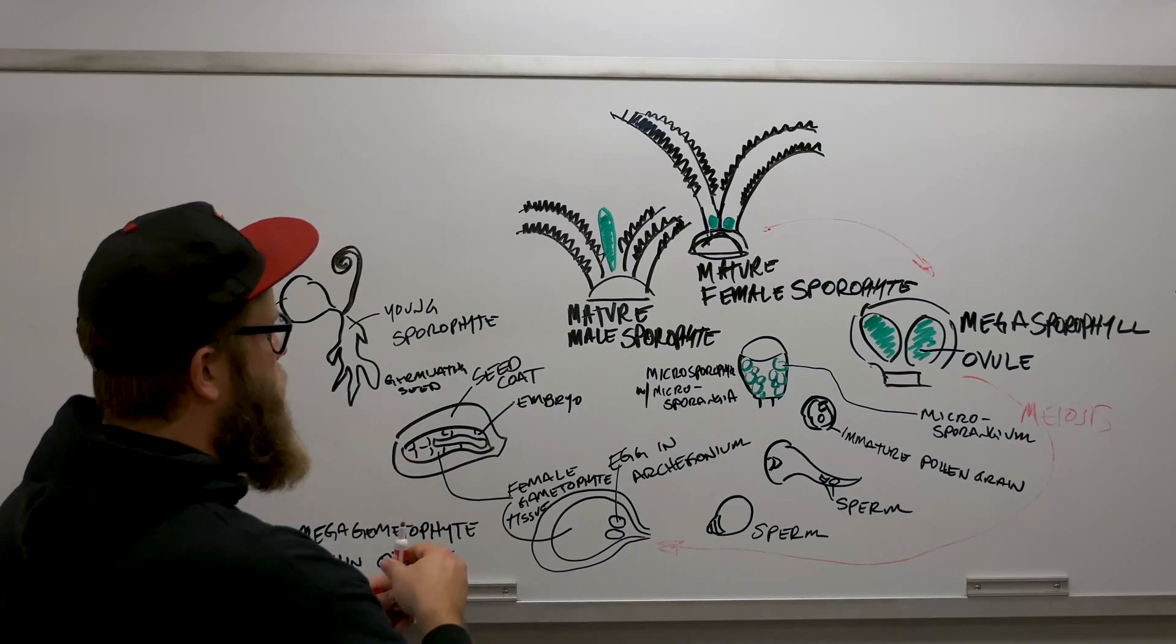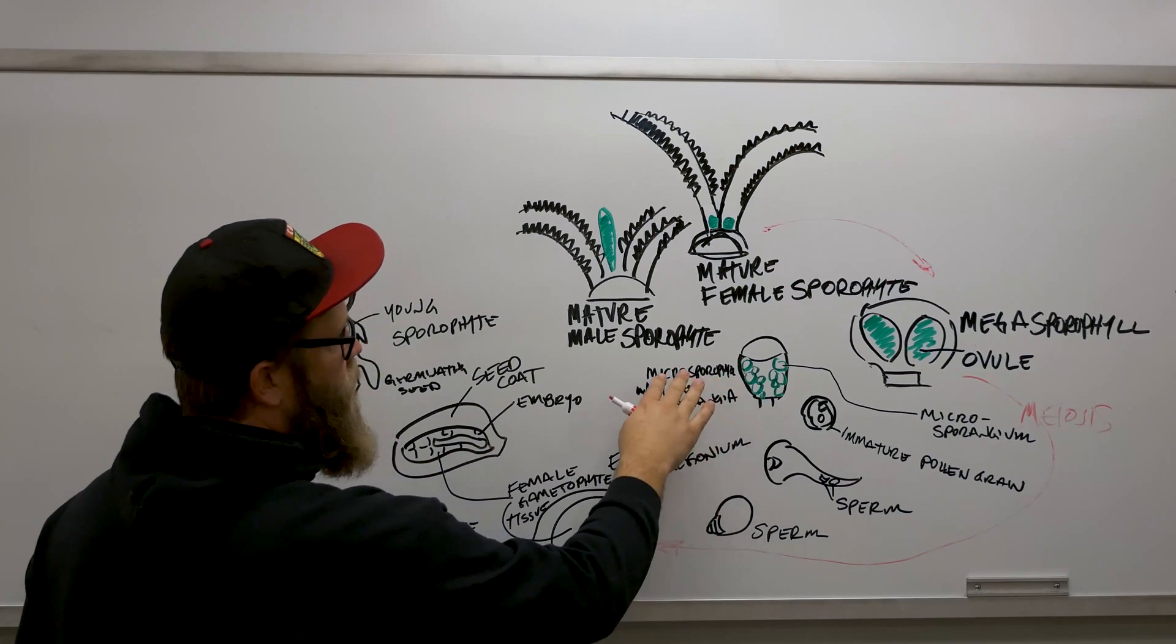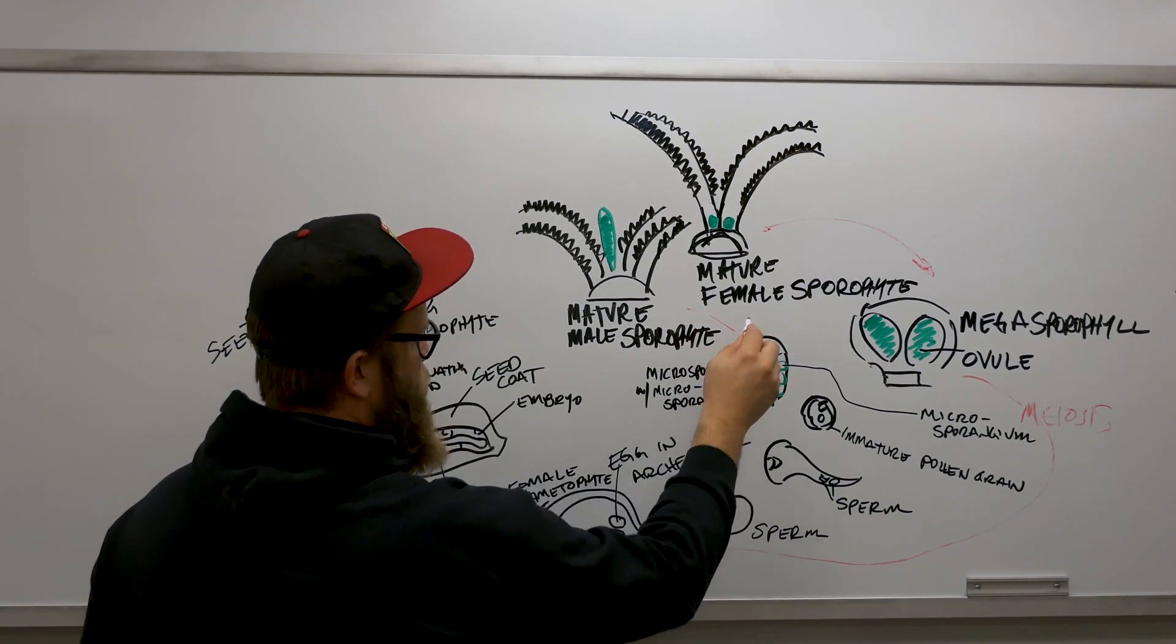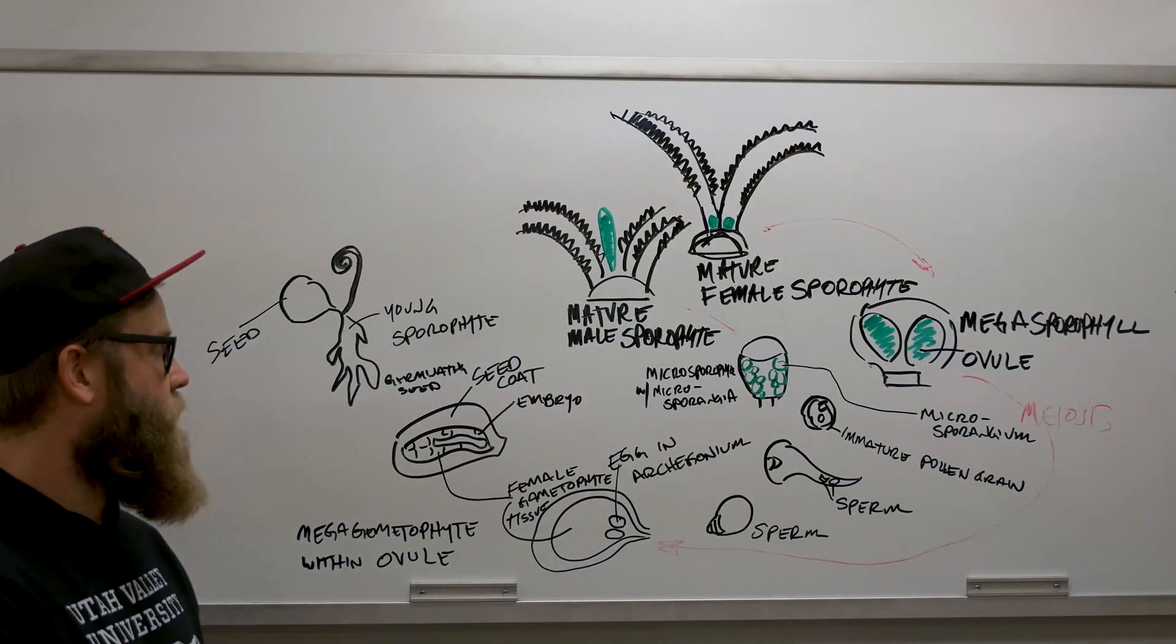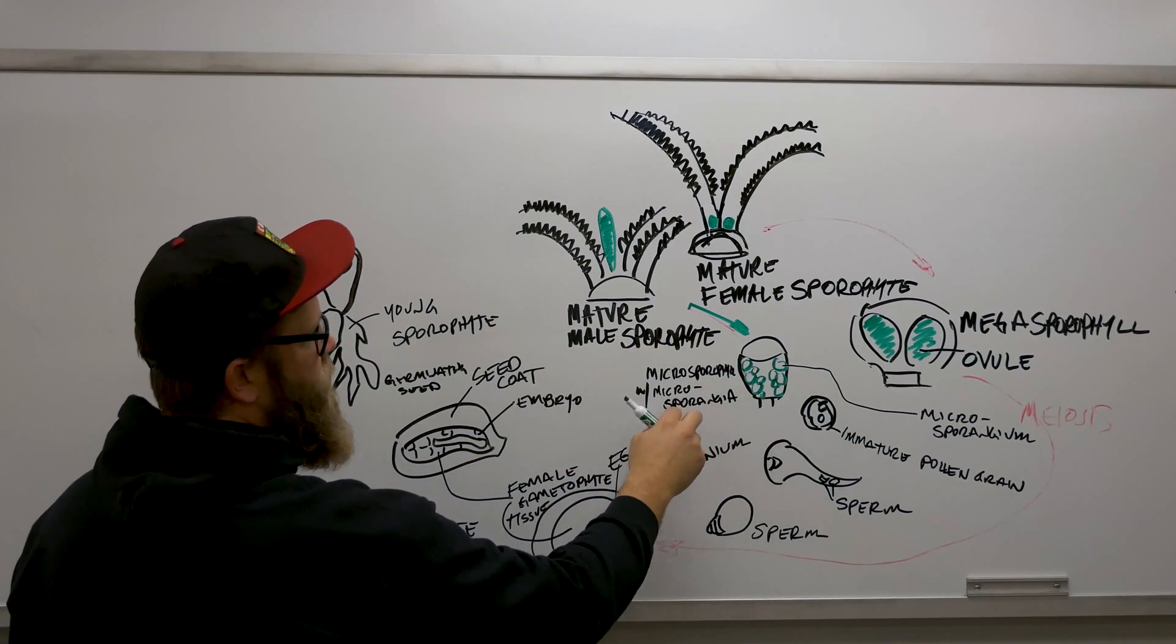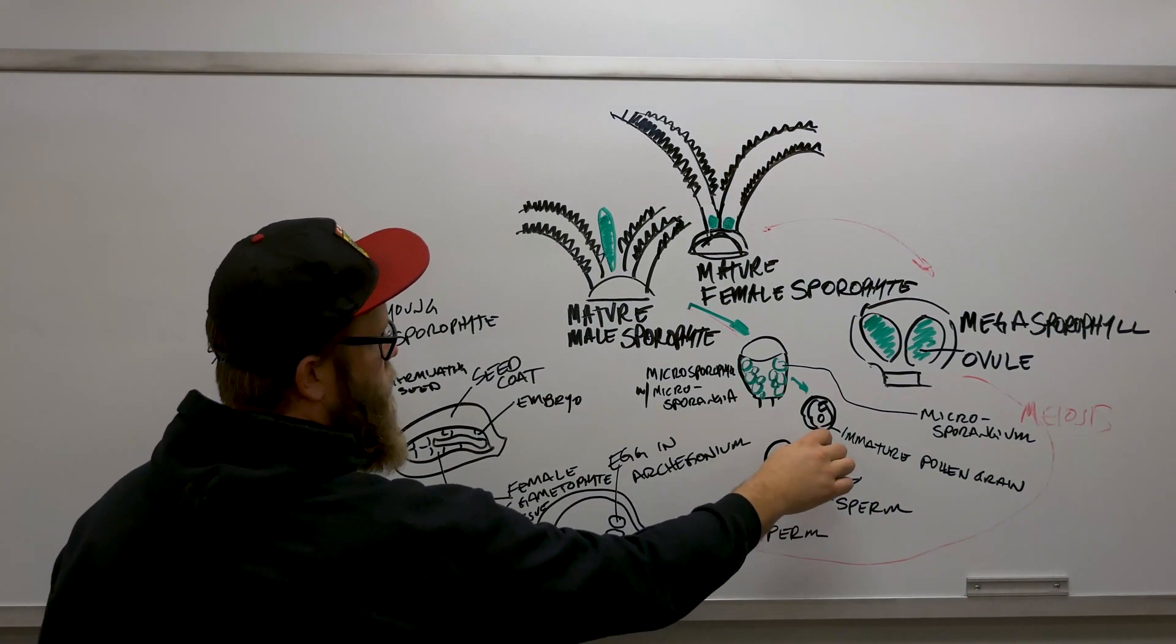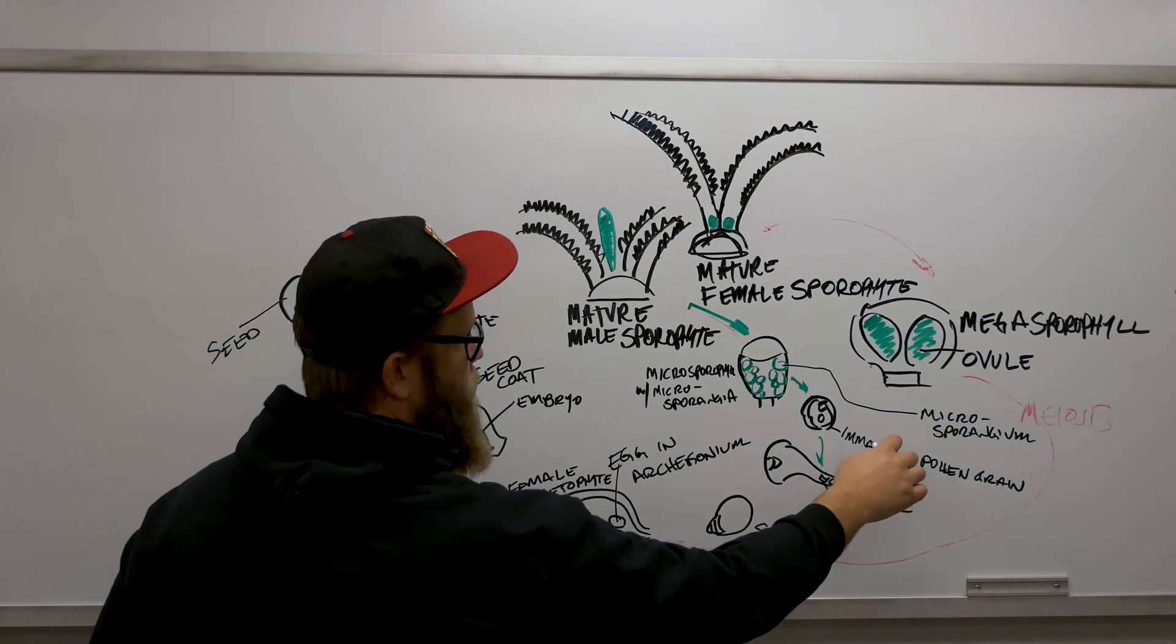If we go through the males, we've got a microsporophyll with microsporangia, these smaller structures. We've got this microsporangia and there are these immature pollen grains. From those, these outgrowths occur and eventually we get our sperm.